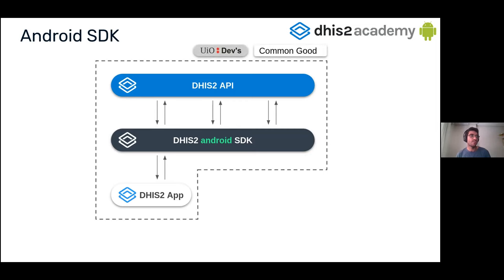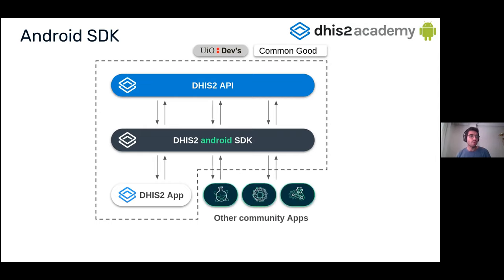All three products — the DHIS2 API, the Android SDK, and the capture app — are delivered by the University of Oslo. They are available to you: the source code, the library itself. What we are going to learn here is how to build your own applications in case the official capture application does not meet your requirements and you have a particular use case.